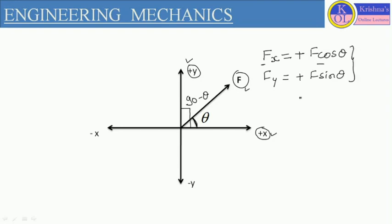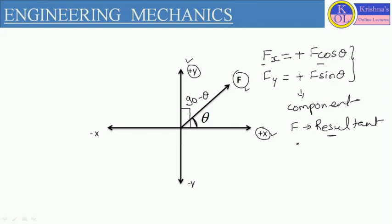Here Fx and Fy are representing the components of the resultant. We can define the resultant as the vectorial sum of a number of components of the forces. This is the resolution of forces — if we are resolving a force into a number of components, it is called resolution of forces. Here we are defining two components, Fx and Fy, but in resolution of forces we can define an infinite number of components. It is not necessary that the components be only 2, in x direction or y direction — the components can be infinite.